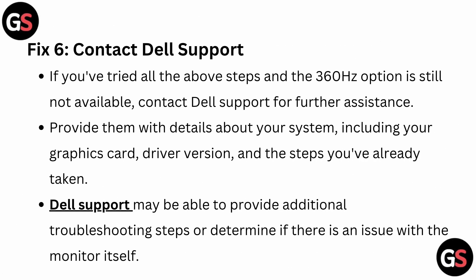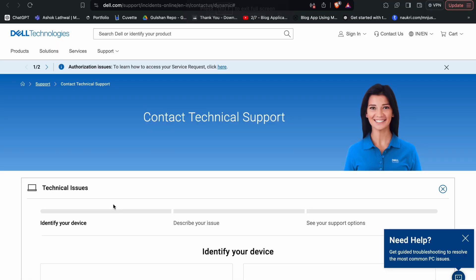Fix 6: Contact Dell Support. If you have tried all the above steps and the 360Hz option is still not available, contact Dell Support for further assistance. Provide them with details about your system, including your graphics card, driver version, and the steps you have already taken. You can visit the Dell Support website and generate a query about your problem, and the Dell technical support team will assist you.